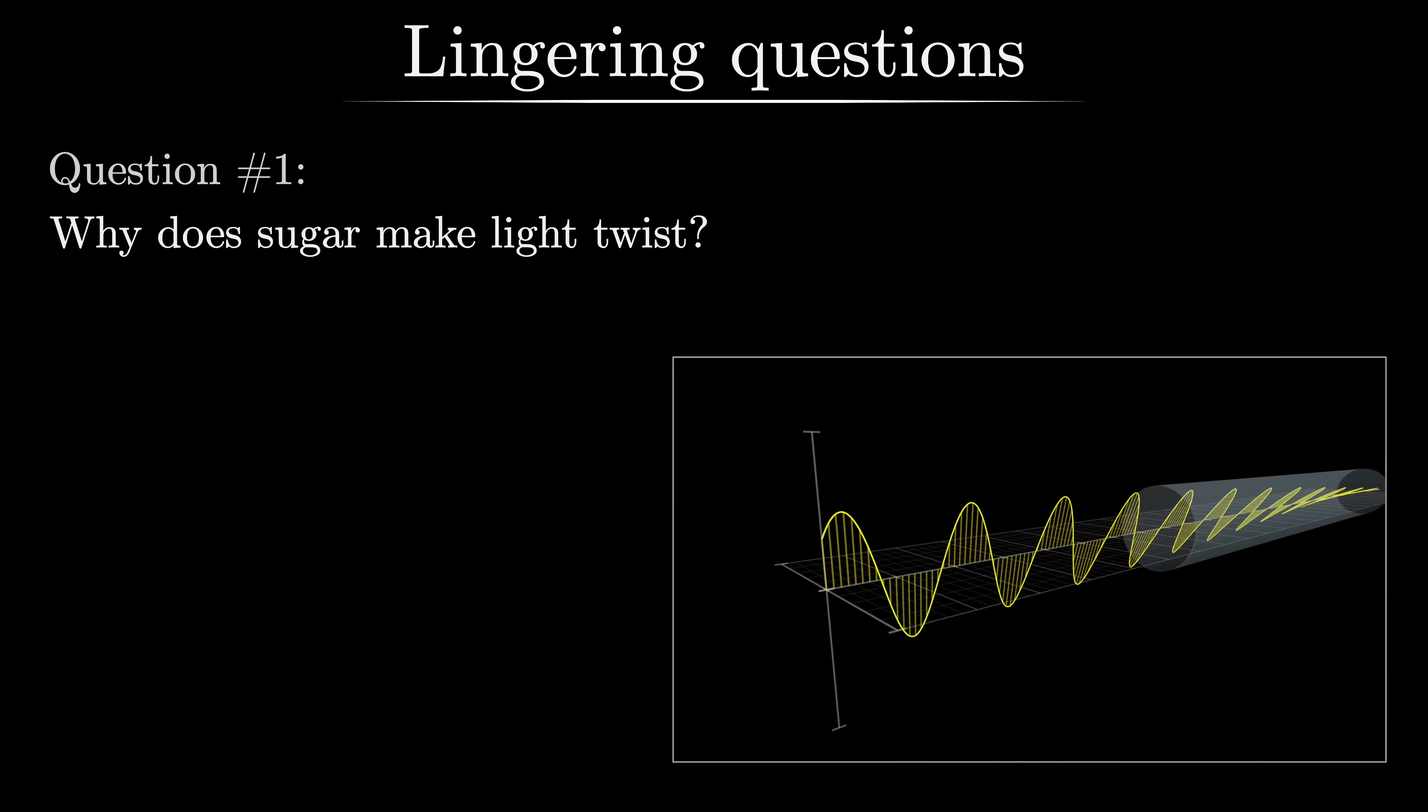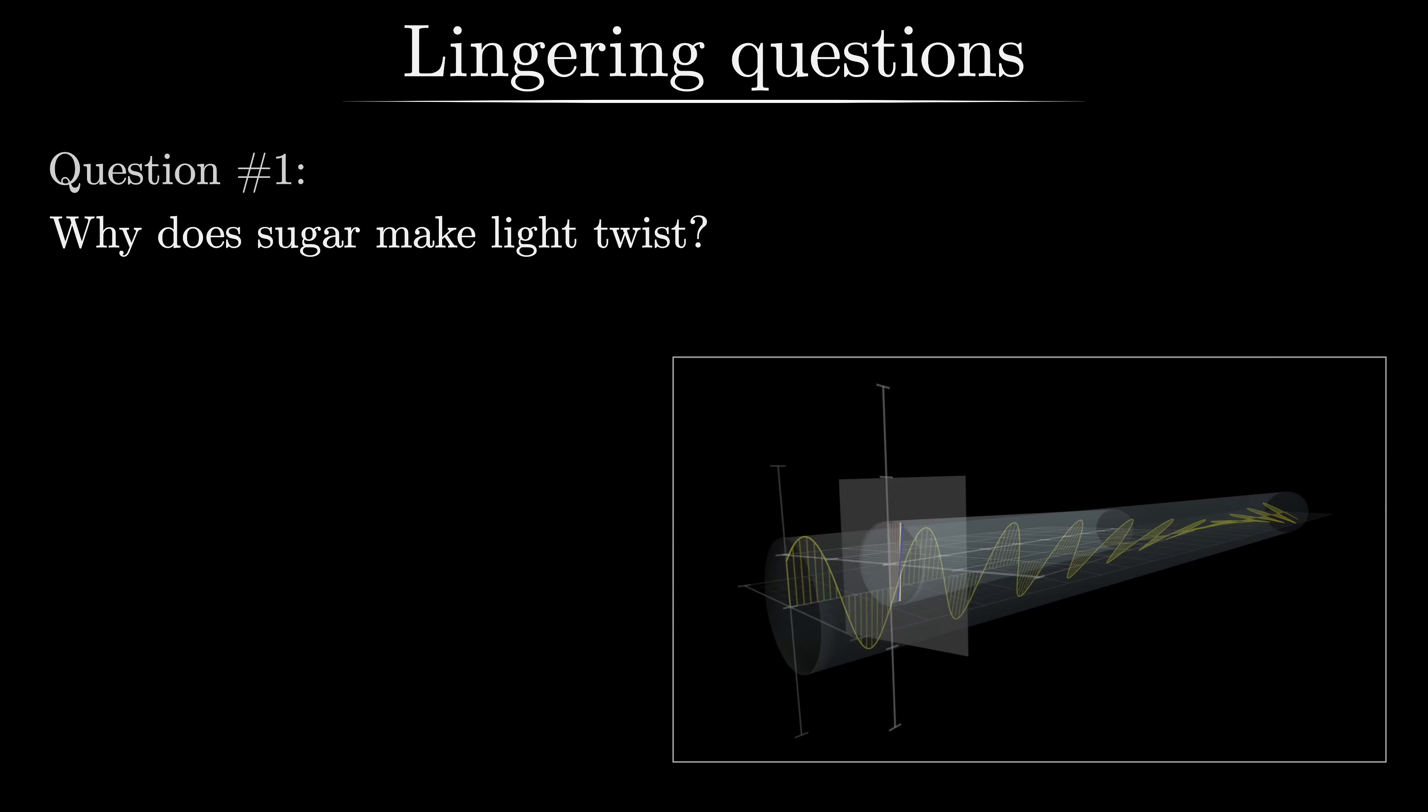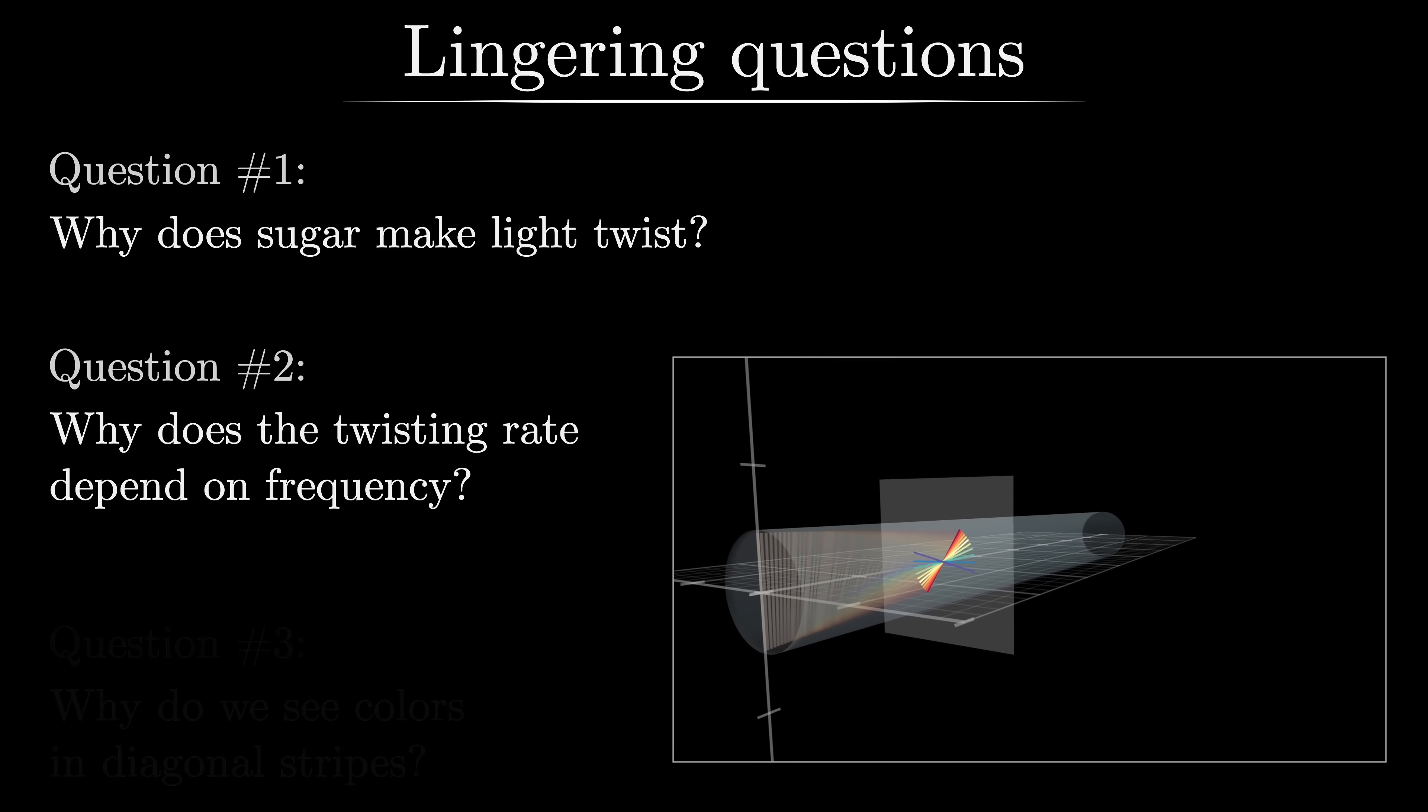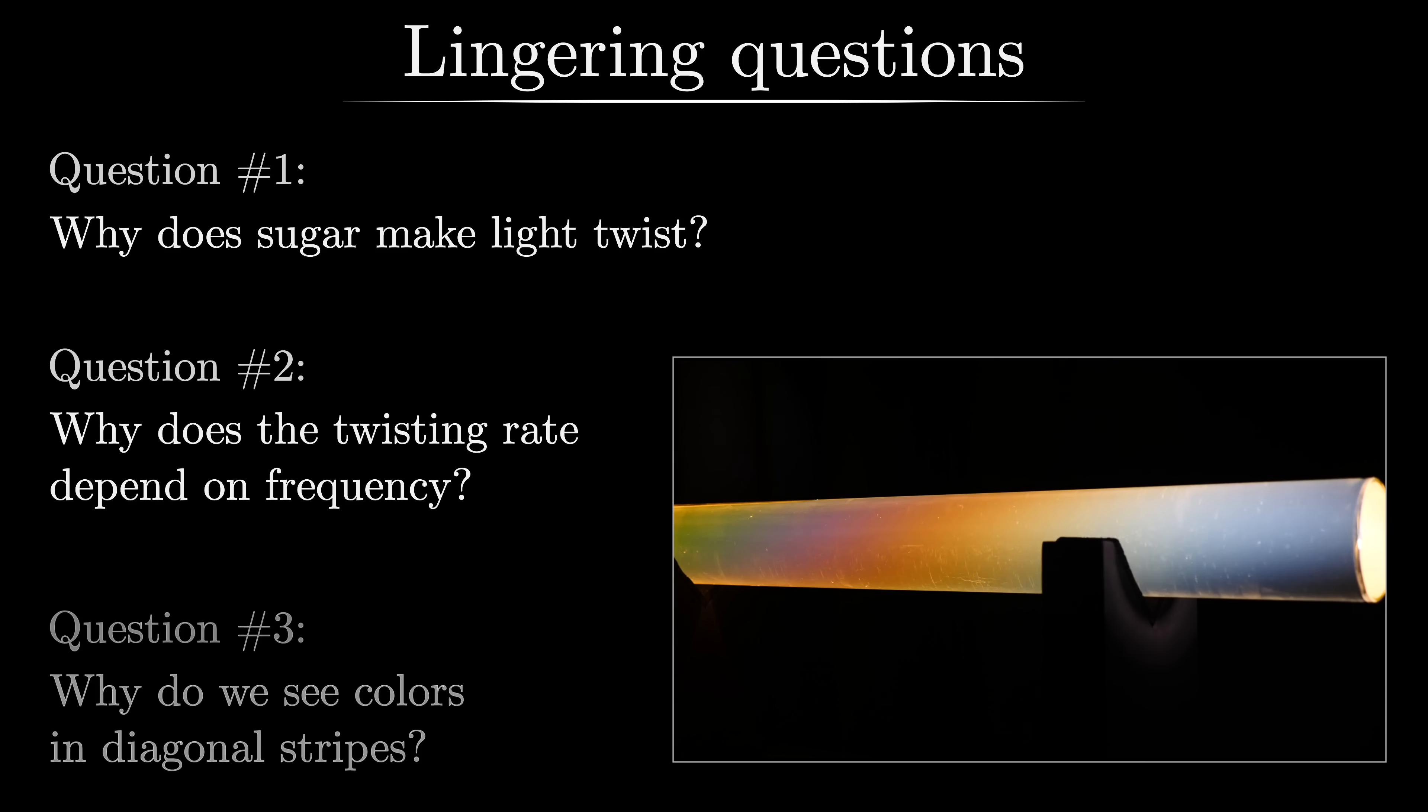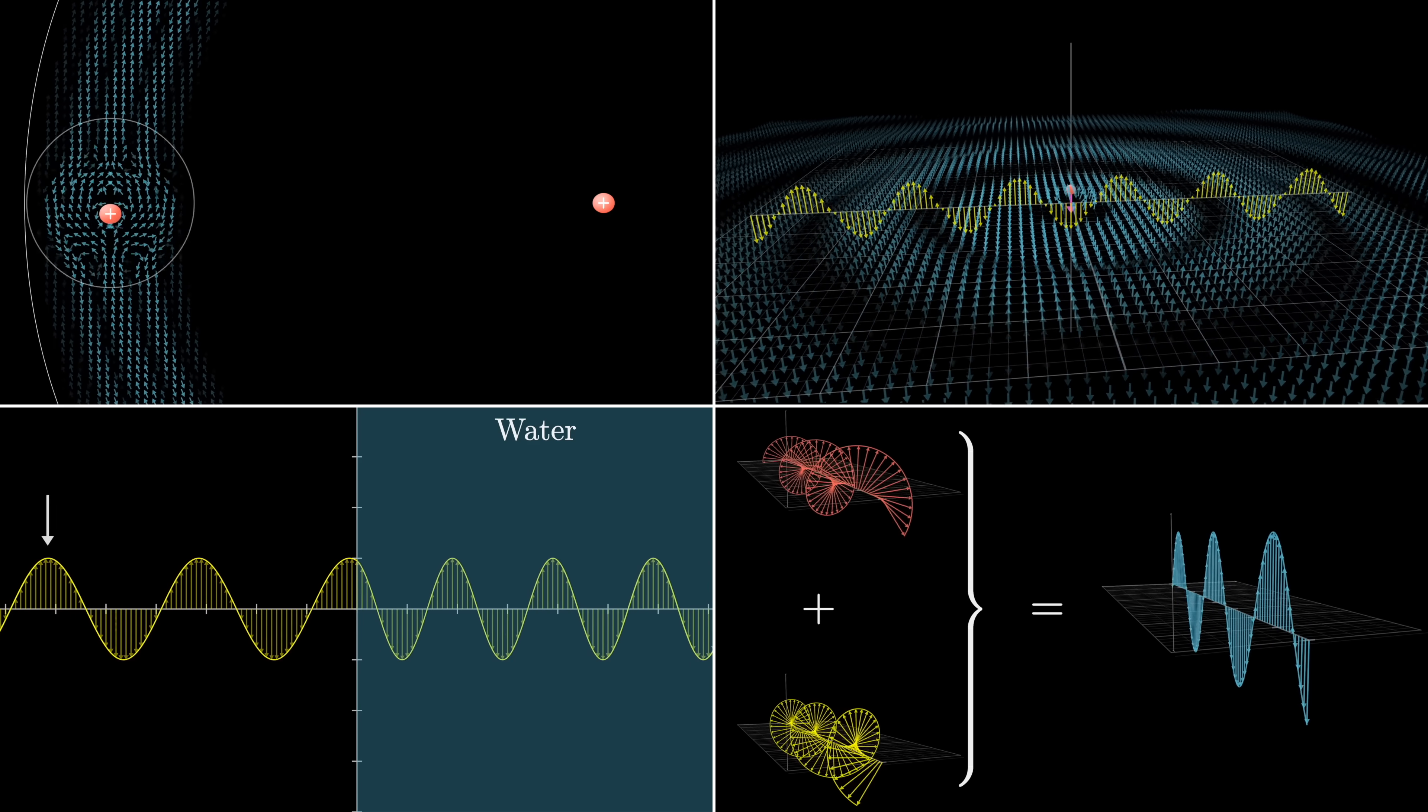So these are the main questions we need to answer. Why would sugar cause the light to twist? Why would the rate at which it twists depend on the frequency of the light? And why, even if you understand both those facts, would you be seeing different colors appear in these diagonal stripes?